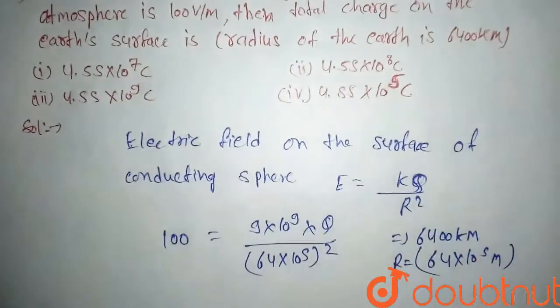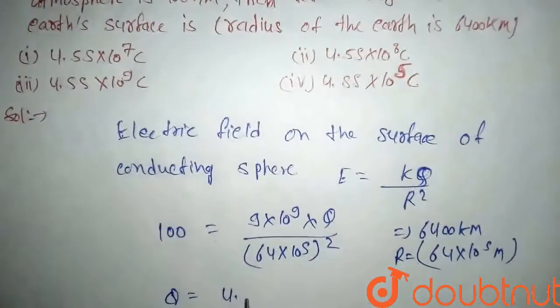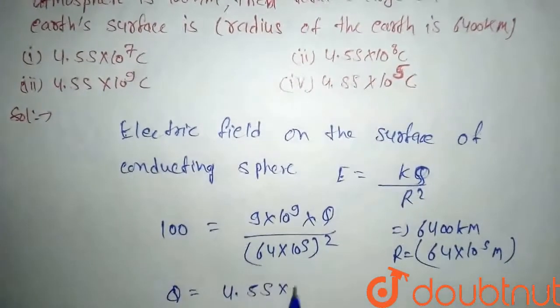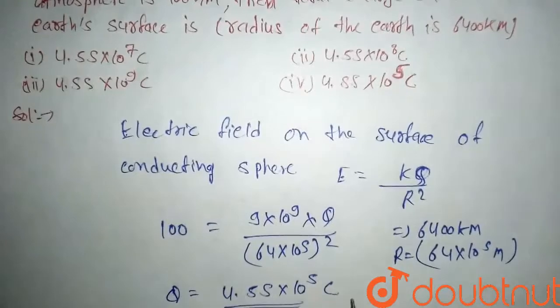So after solving it we will get Q equal to 4.55 times 10 to power 5 coulomb. This will be our answer and our option will be 4th option.